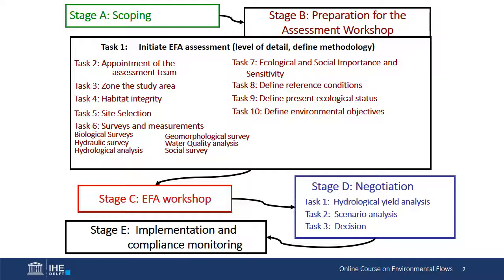Then Stage C is the actual environmental flow assessment workshop where flows are assessed by the different specialists. Stage D is a negotiation process where the recommended environmental flows are integrated with user requirements — domestic, agricultural, industrial, and so on — to see whether the flows in the river can meet all those requirements. If not, there have to be negotiations and compromises. And finally, implementation and compliance monitoring, which is a long-term, basically indefinite part of the process.